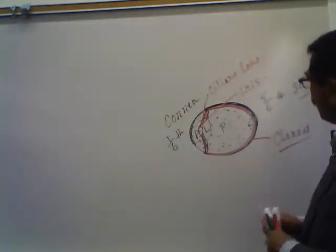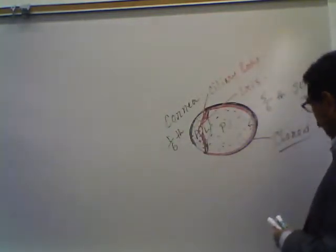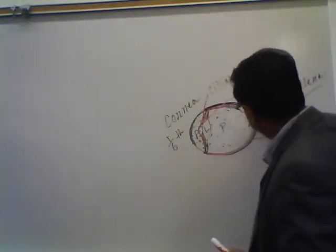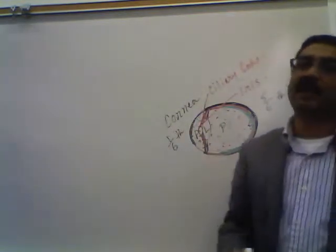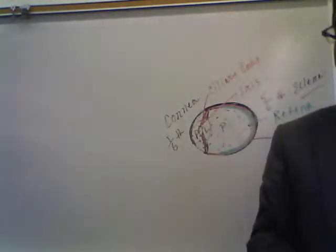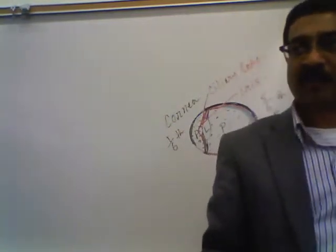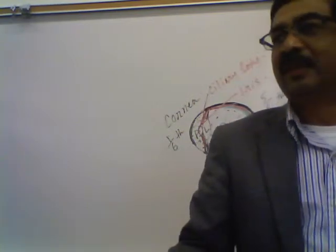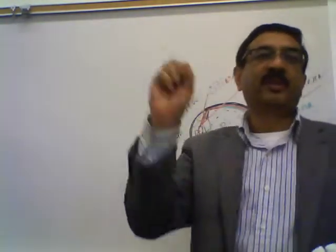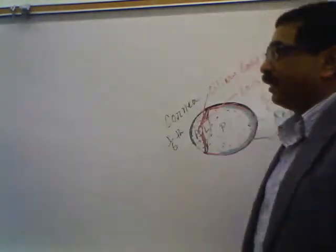The innermost layer is called the retina, and it is only present in the posterior part of the eyeball. This is the most important part of the eye because the receptor cells — the photoreceptors — are located here. That's why this layer is called the sensory layer: different types of sensory receptor cells, the photoreceptor cells, are present in this layer.